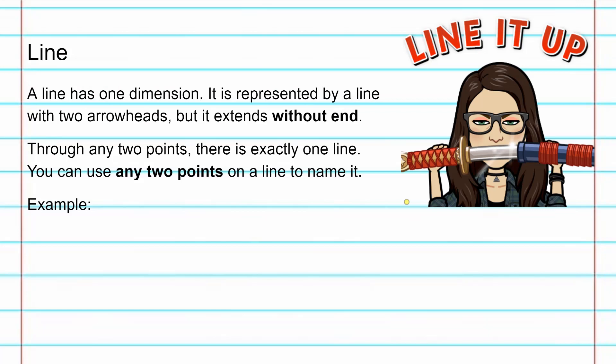A line has one dimension. It is represented by a line with two arrowheads, but it extends without end. Through any two points, there is exactly one line. You can use any two points on a line to name it.